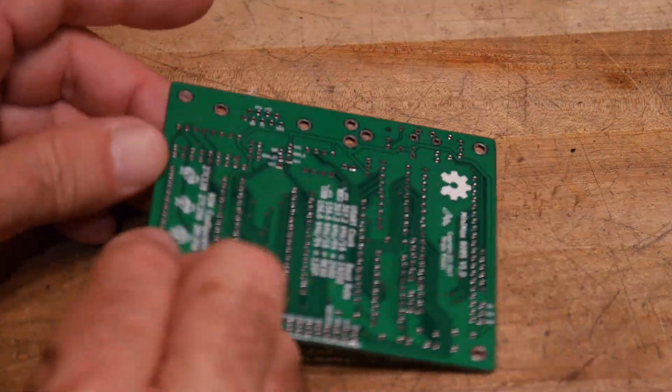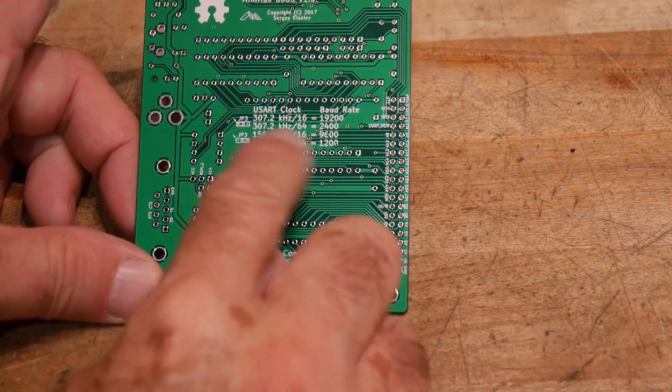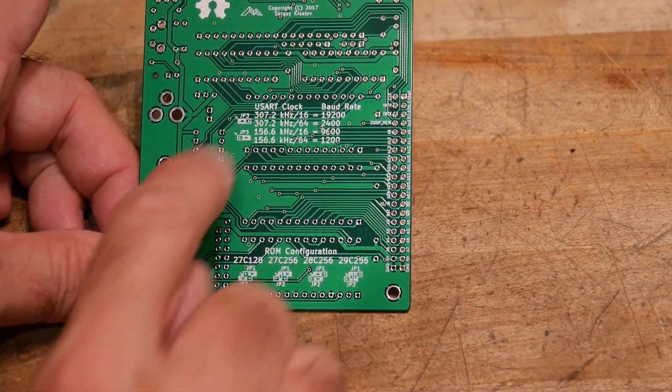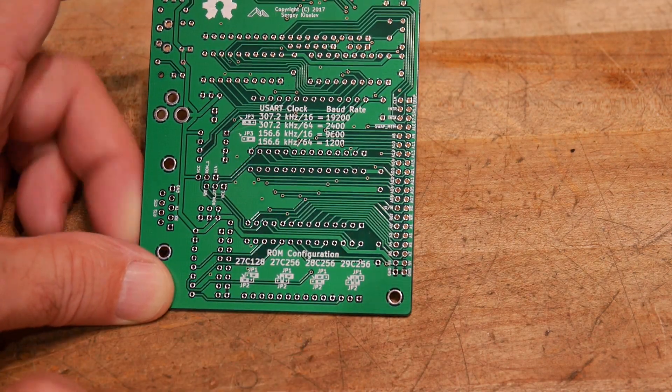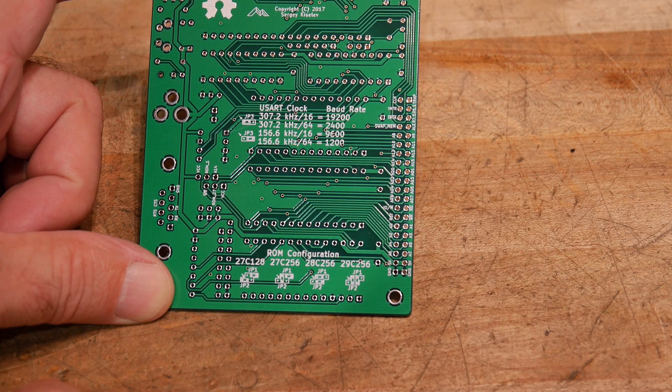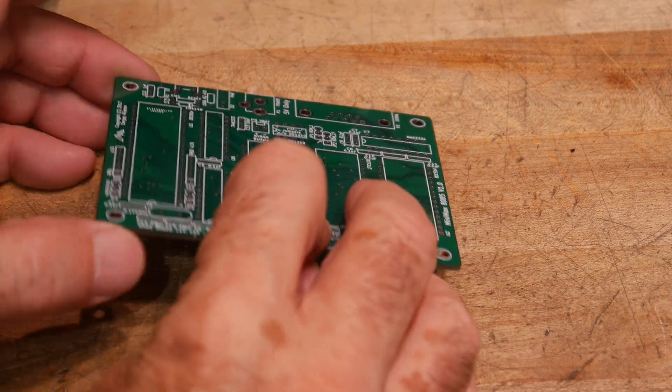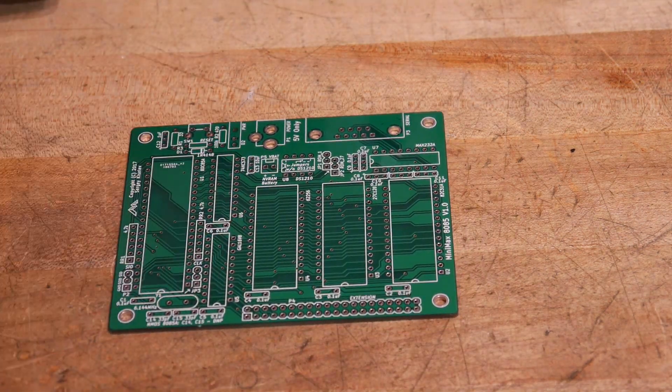So, where'd that board go? Here it is. The back side of the board tells you some about the jumpers. The baud rate jumpers and the ROM configuration jumpers. Yeah. Looks pretty nice.